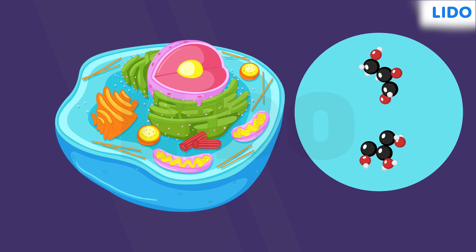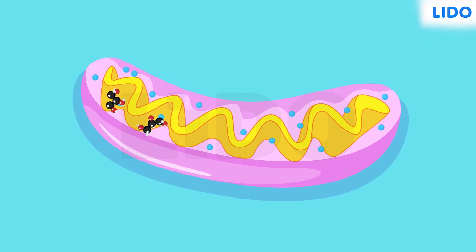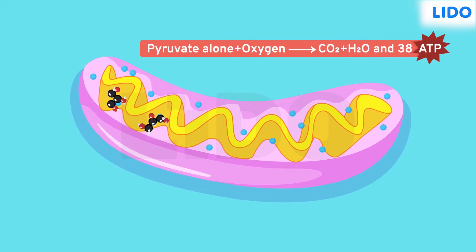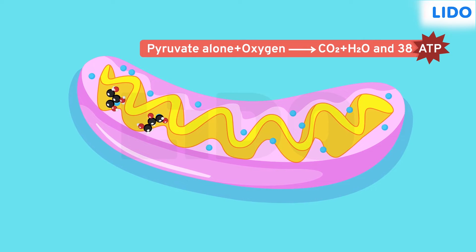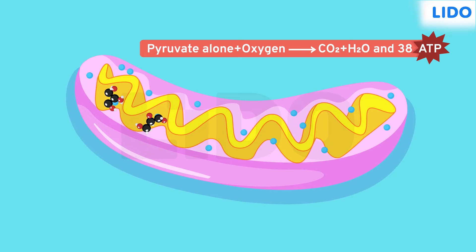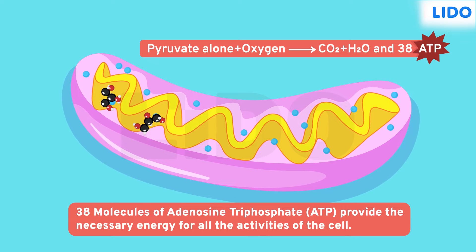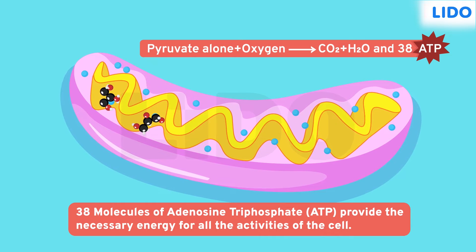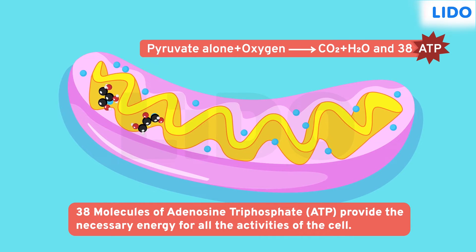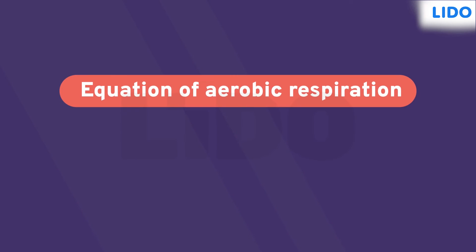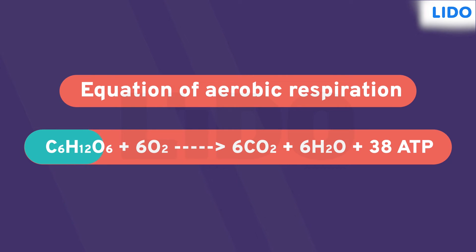In the second step, the pyruvate moves from the cytoplasm to the mitochondria. In the mitochondria, pyruvate in the presence of oxygen is further broken down to produce energy, carbon dioxide, and water molecules. The energy is used to produce 38 molecules of adenosine triphosphate, which provide energy for all the activities of the cell. The entire process of aerobic respiration can be summarized as: C6H12O6 + 6O2 → 6CO2 + 6H2O + 38 ATP.